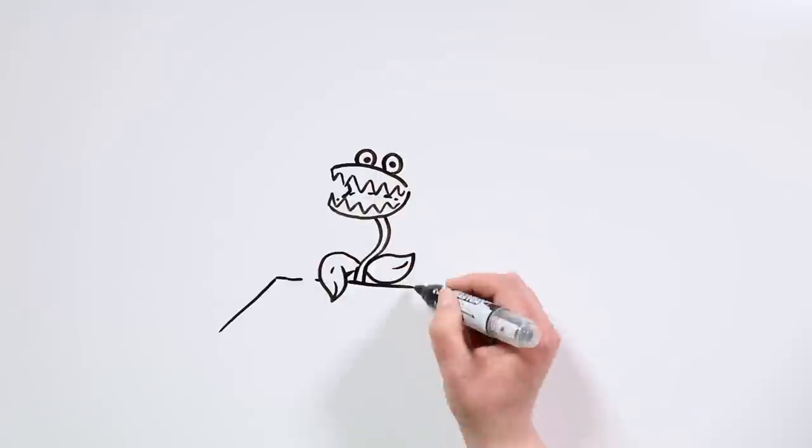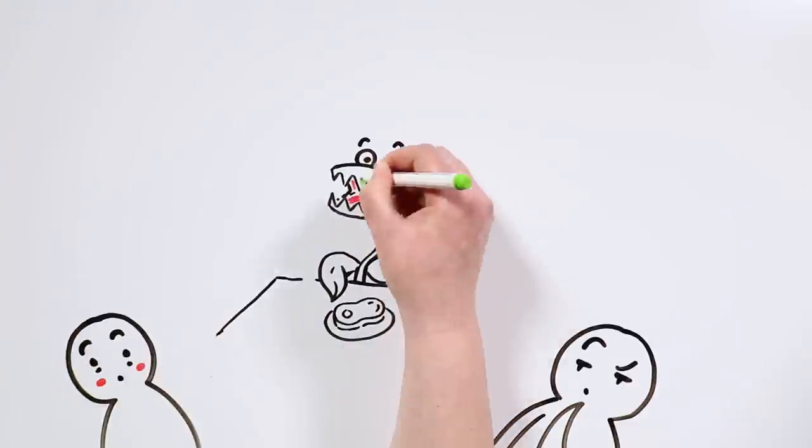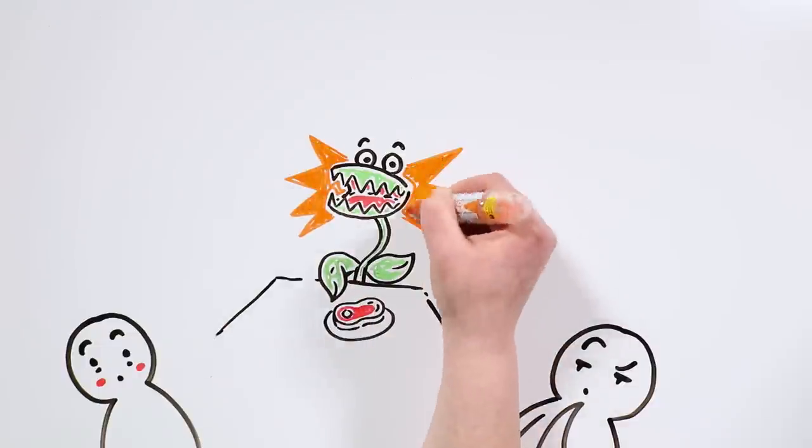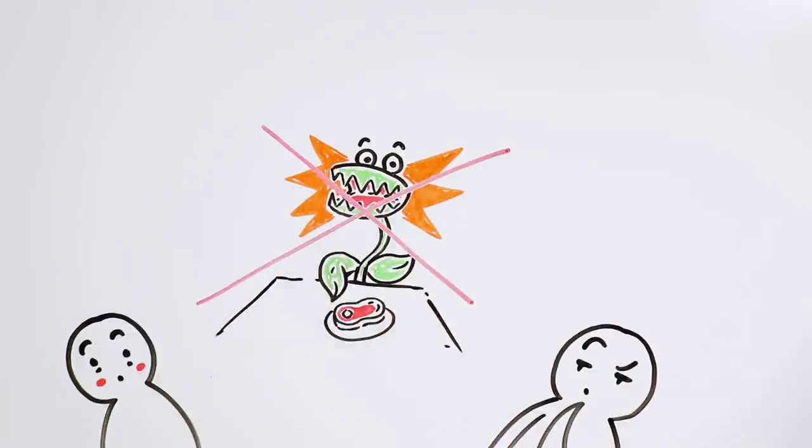The first time Tikentak heard about carnivorous plants, they imagined them sitting at a table enjoying some barbecue ribs, but no, that never happens.